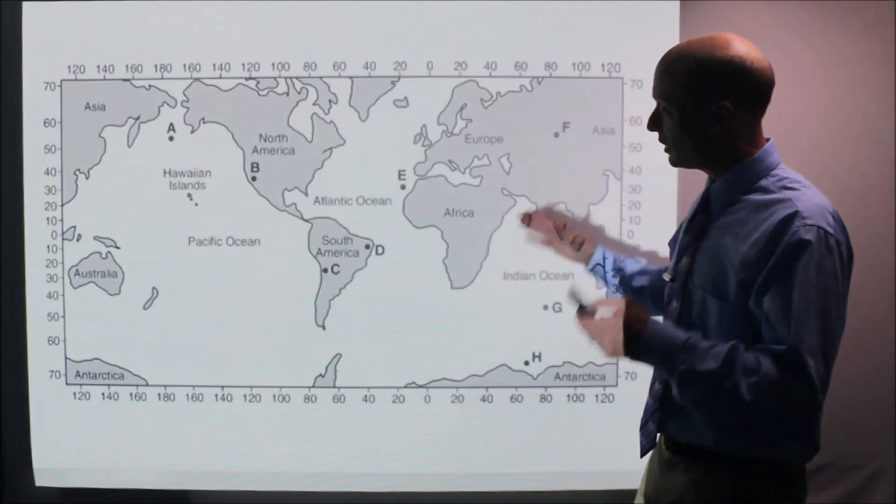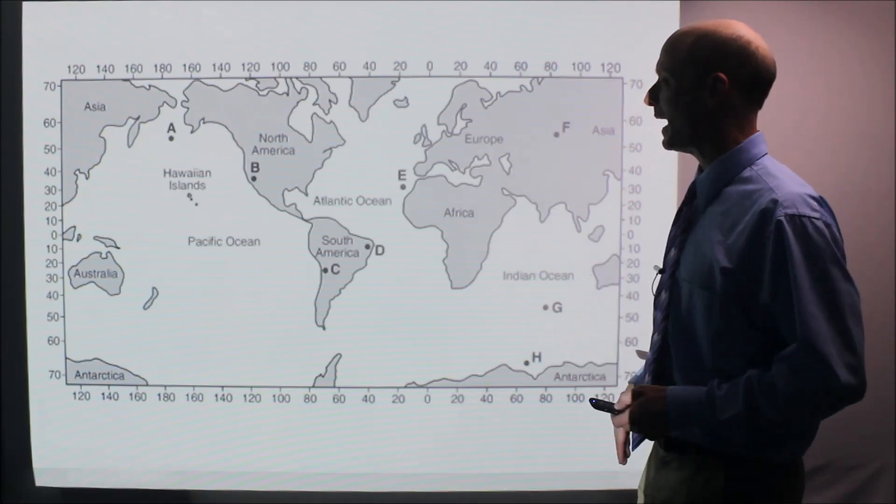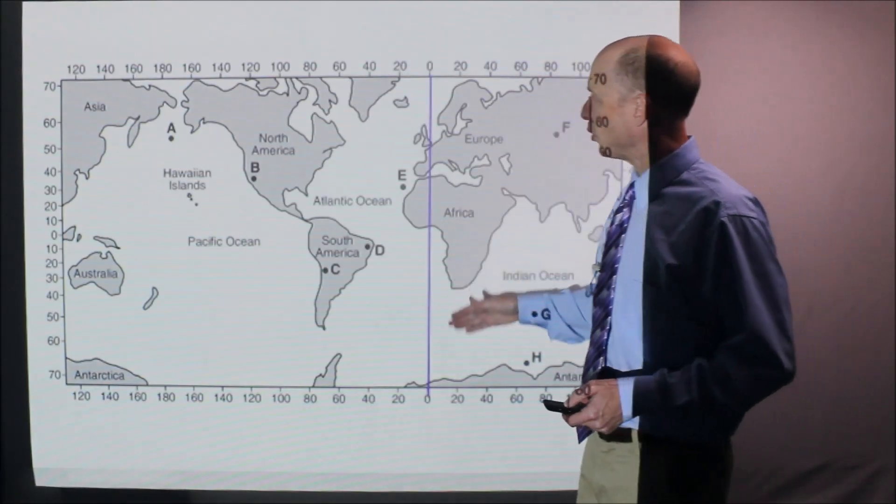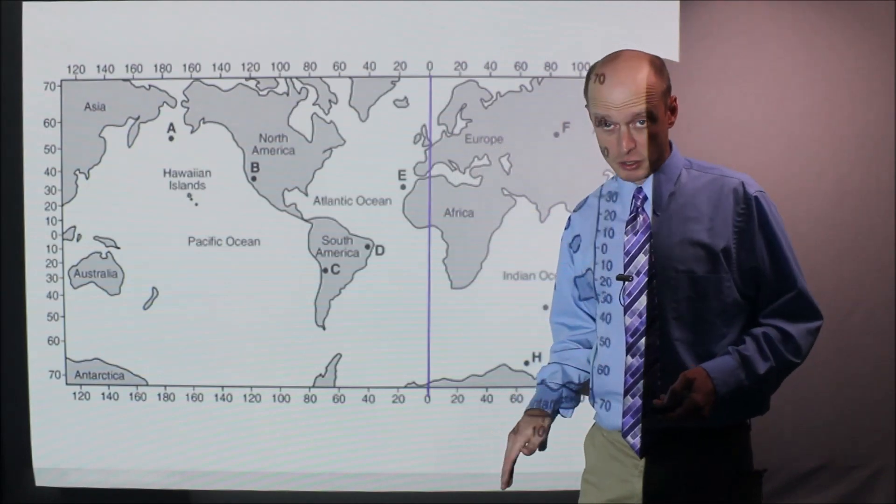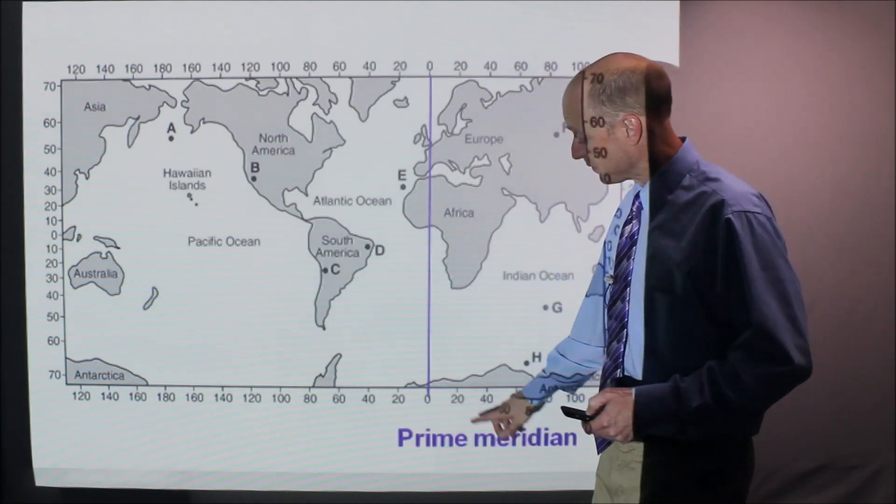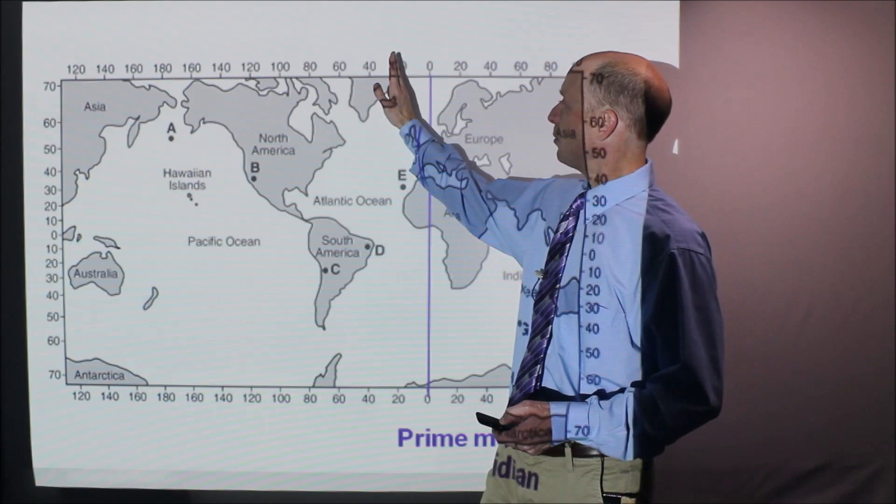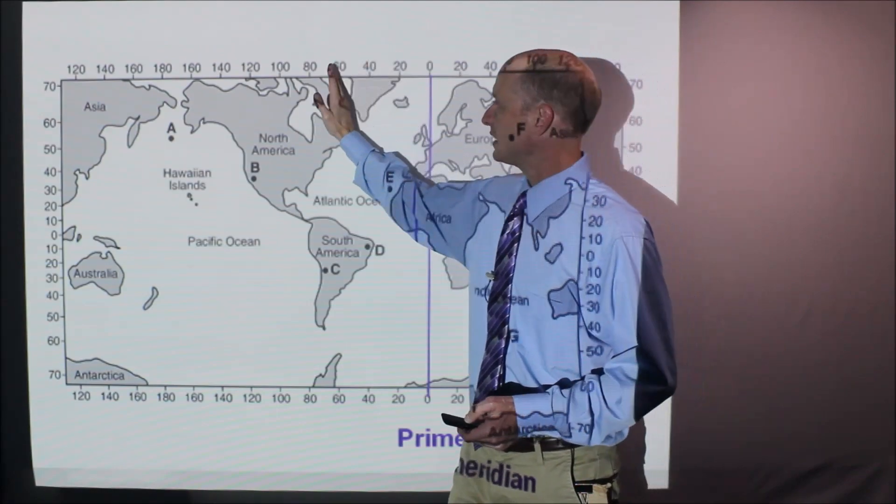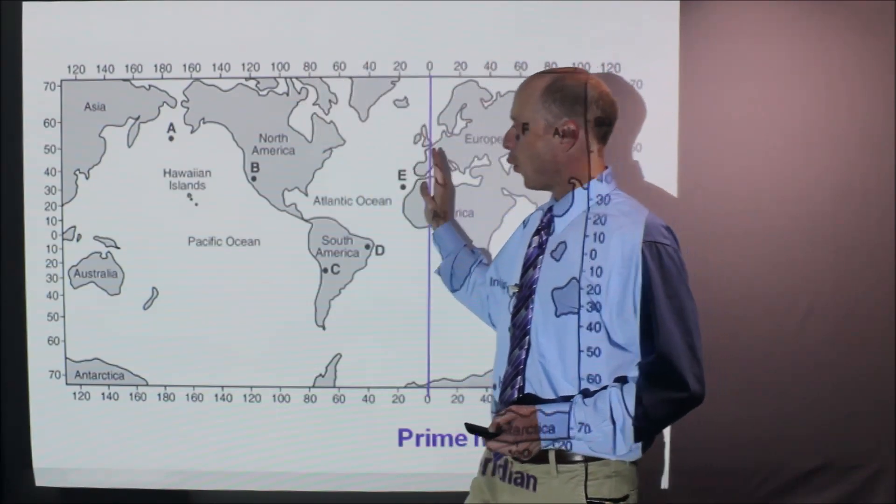Oftentimes it gets presented like this. Here's a world map or most of a world map. Here in purple we have zero longitude. That's called the prime meridian. So all of these numbers, 20 longitude, 40, 60, 80, these are all west.